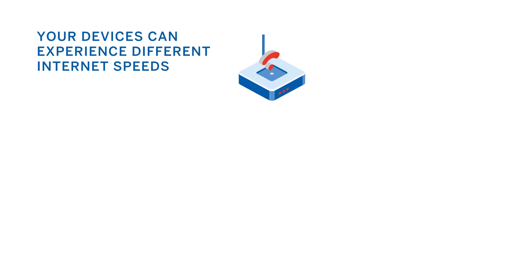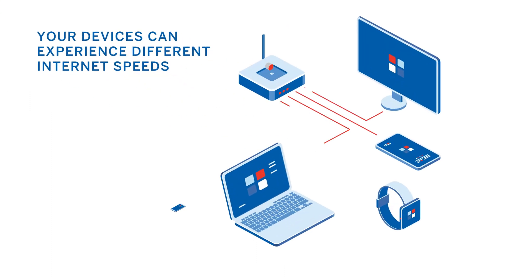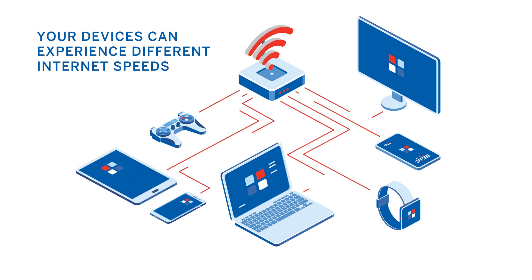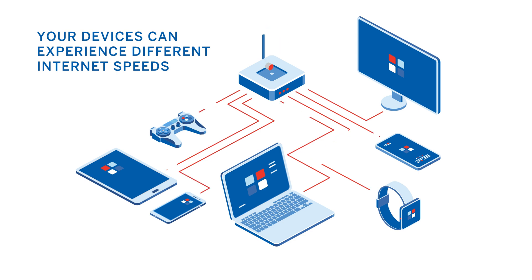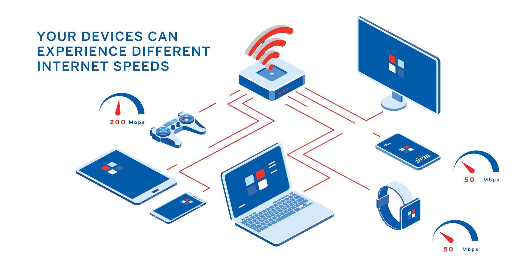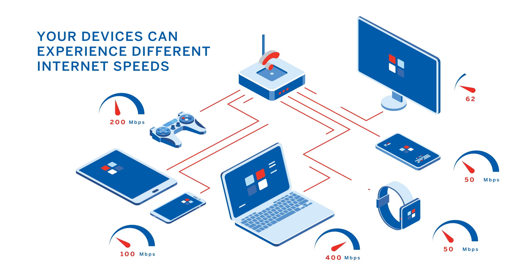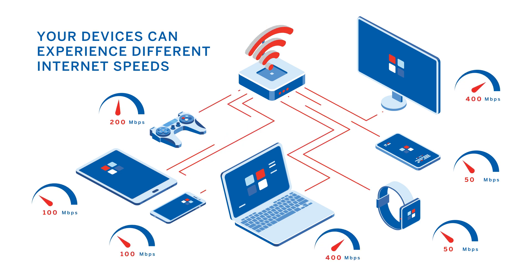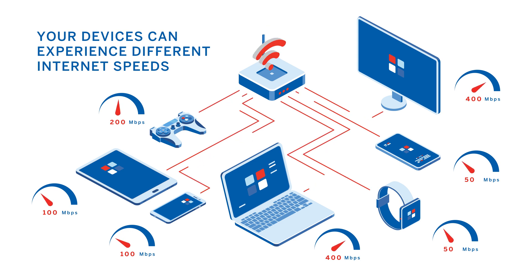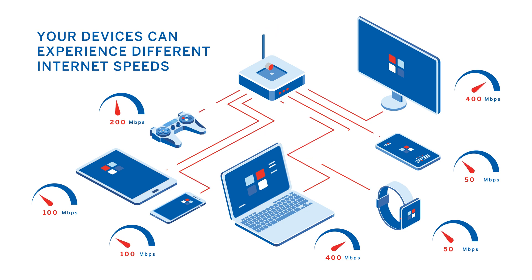Sometimes your devices can experience different internet speeds. You may experience slower speeds on older devices that aren't equipped with the latest Wi-Fi technology. Even newer devices can experience different internet speeds, because Wi-Fi is sent and received through antennas within each device. For example, smartphones may have one or two antennas, while newer TVs and laptops may have three or more. Therefore, your TV's connection may be faster than your smartphone's, because it has more antennas.